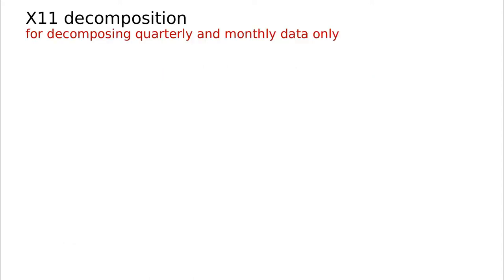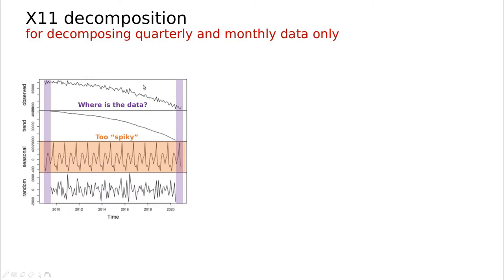One of these methods is called X11, and the problem with this method is that it only works for quarterly and monthly data. When we discuss basic decomposition, we have the problem that we were missing some of the parts in the series — the beginning or the end — and the other problem was that the seasonal part was too spiky, because of noise and because we are subtracting the trend from the original data, sometimes we are overestimating the role of seasonality.